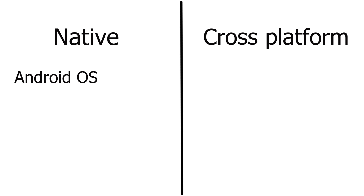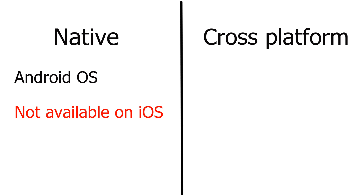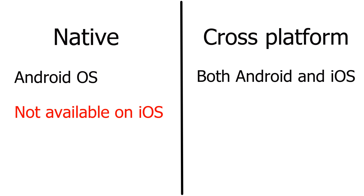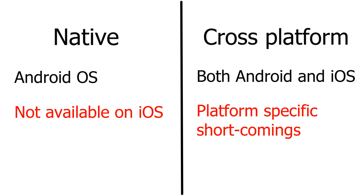The big shortcoming of going native is you can only build an app that exists on the Google Play Store — you can't make an iOS version of it. The next category is cross-platform development, where you can build an app that works on both Android and iOS. The downside is it's usually not as good in some way — there's some kind of limitation. That's why native exists; otherwise everybody would just use cross-platform because obviously you're killing two birds with one stone and getting more users.